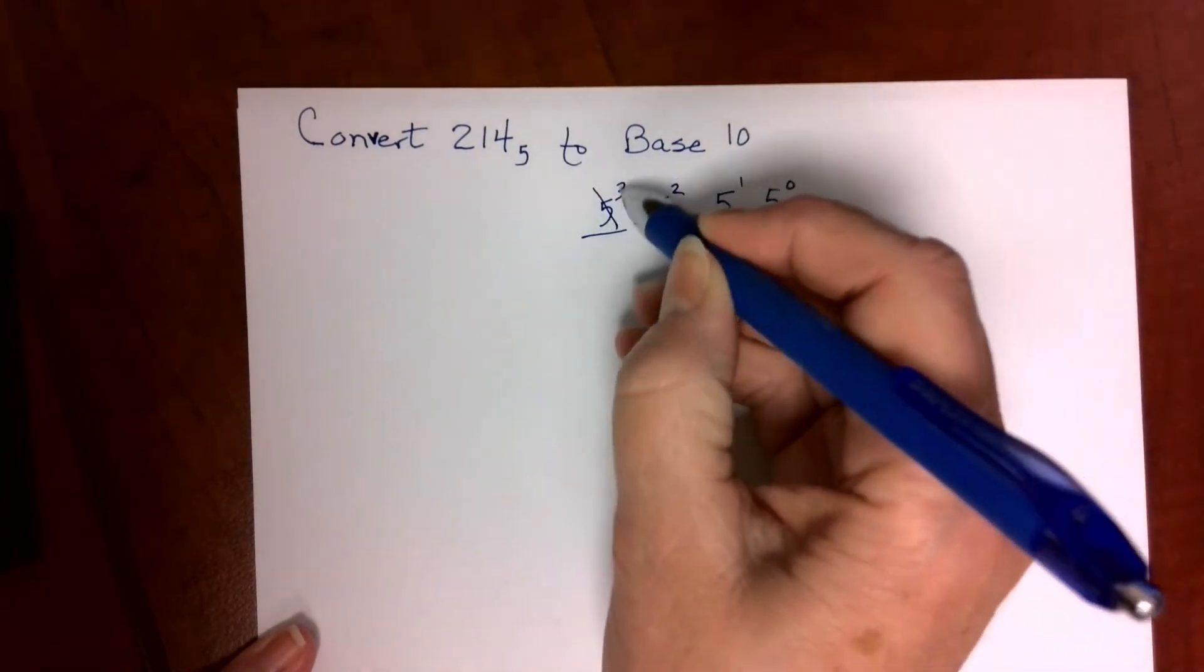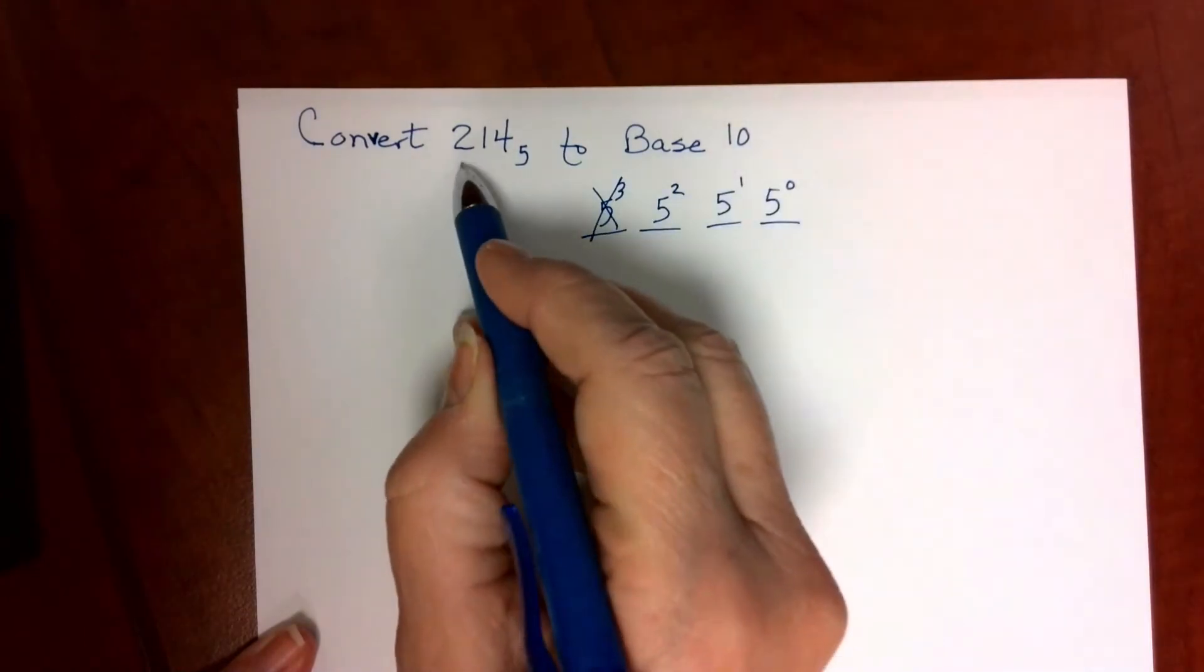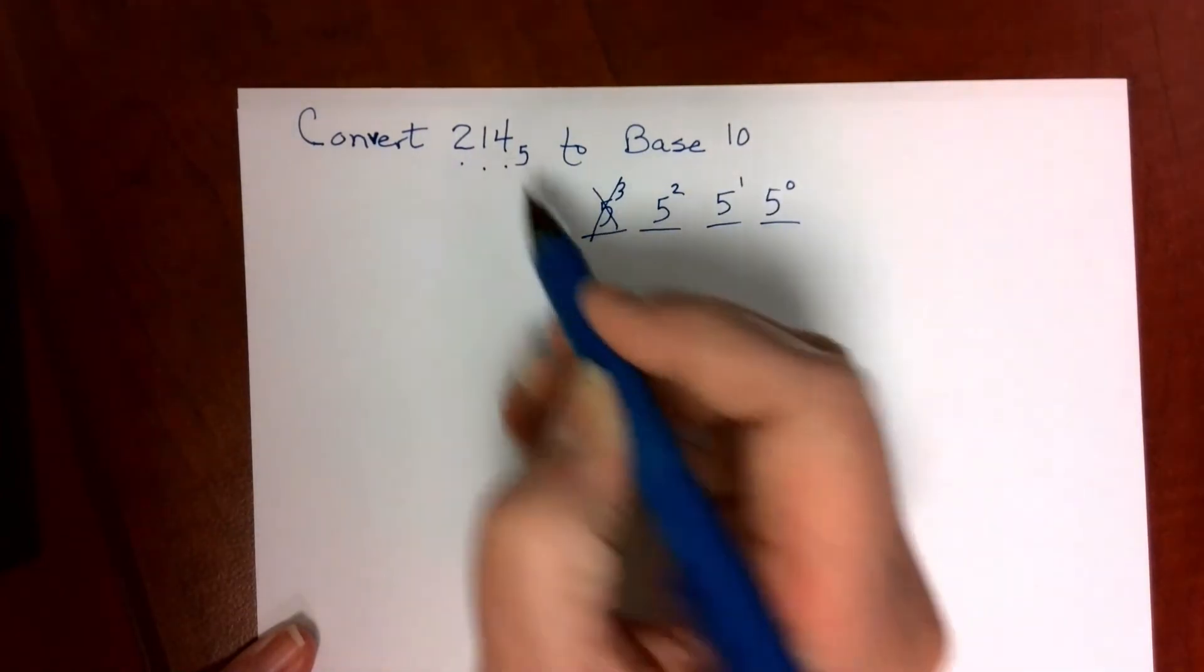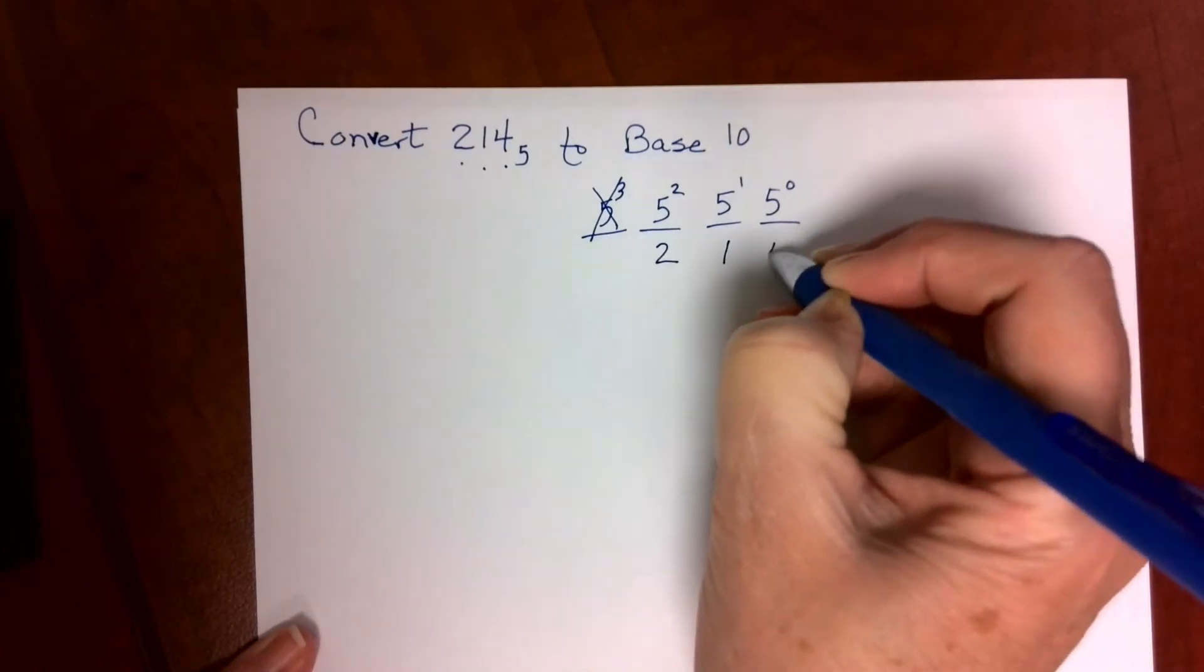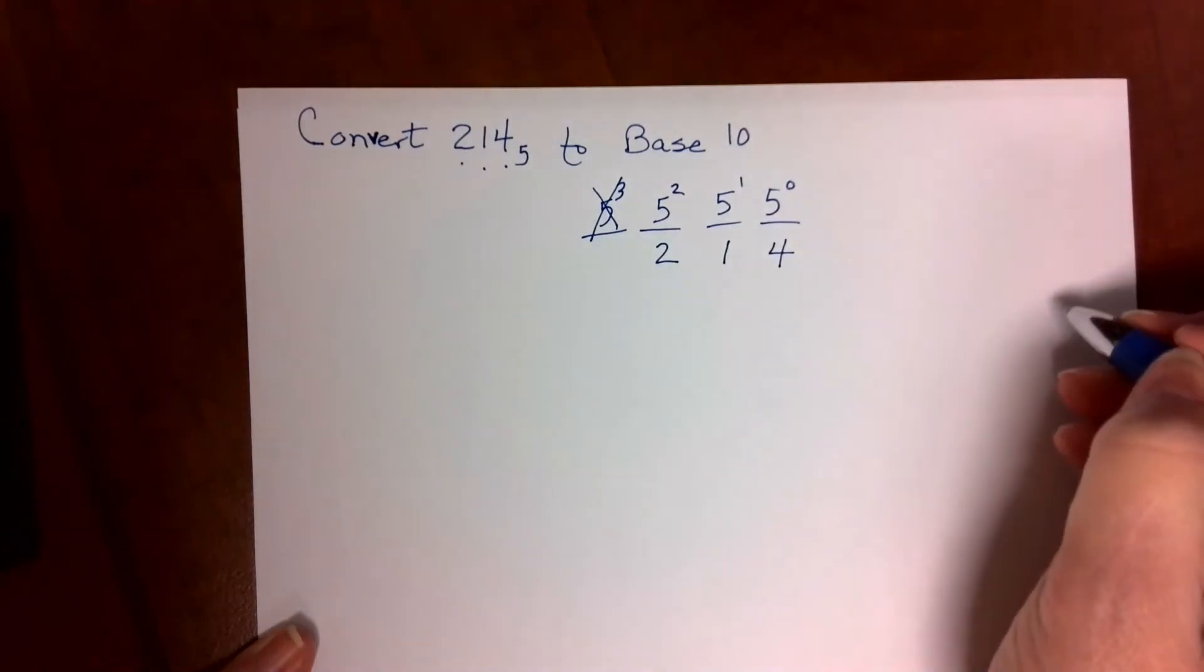In fact, we don't even need this column because, as you can see, we have 3 digits. Those 3 digits get put right into the 3 columns on our paper.